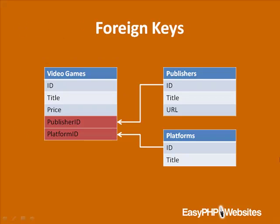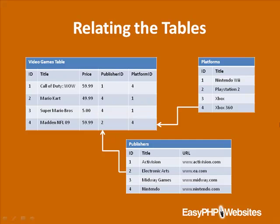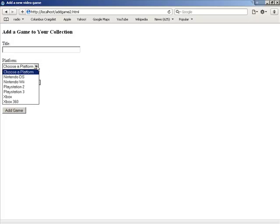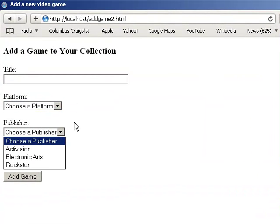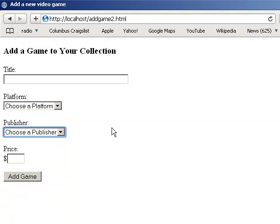Now we're able to uniquely identify each row in a table using this primary key, giving us the ability to reference primary keys from multiple tables in order to interrelate data. When these primary keys are referred to from within other tables, they're known as foreign keys. In this diagram, I've highlighted the two foreign keys found in the video games table. Using these foreign keys, we can create the video games table, mapping the rows found in the platforms and publishers tables to each game. With this structure in place, we can revise the game form so it looks like this.